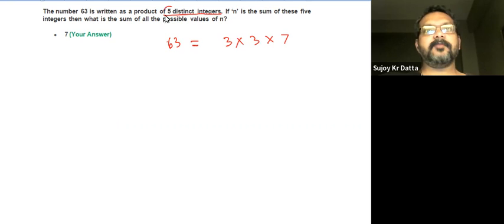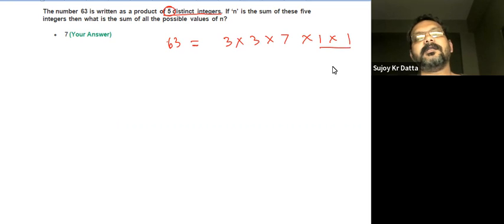And you need five distinct numbers. So maybe you could have used 1 and 1, but then you can't use the same number twice. Here we have already used it twice.